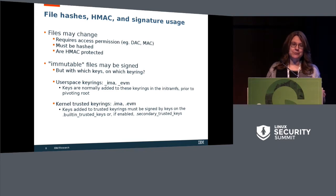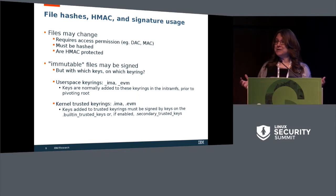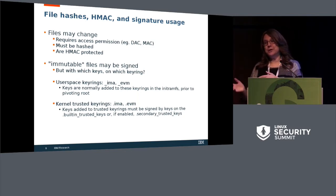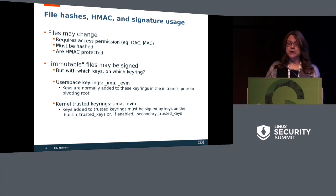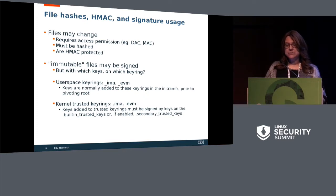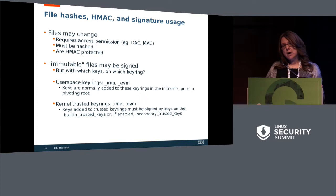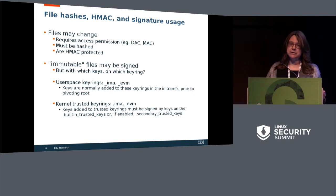For mutable files — which by definition can't be signed, because if they are signed they won't work if you change them — we hash them. In EVM, we use the HMAC to protect them. This is really an offline protection, and we're dependent on access control — either discretionary or mandatory — to do the gating and enforcement. For immutable files — your executables and libraries, things that aren't changing — you can sign them with an IMA signature or an EVM signature.